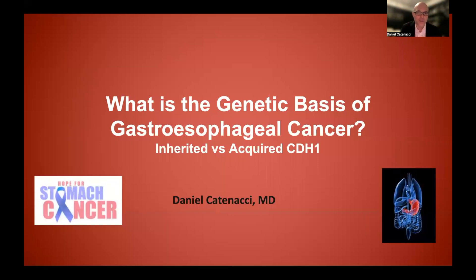In this video, we talked about the genetic basis of gastroesophageal cancer with specific focus on the CDH1 gene and its protein product E-cadherin, and distinguished between inherited versus acquired versions of this problem. The majority of cases are acquired through one's lifetime, but a subset are inherited and would be tested for if appropriate. Overall, CDH1 mutation occurs in about 5–10% of all gastric cancers and is a notorious culprit for diffuse-type gastric cancer for the reasons discussed.